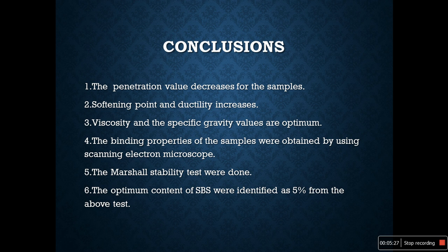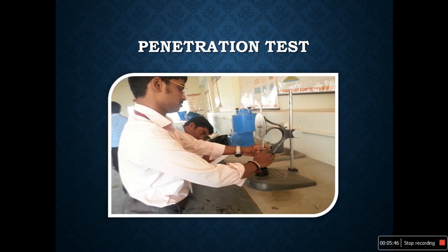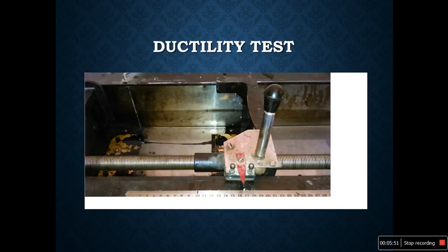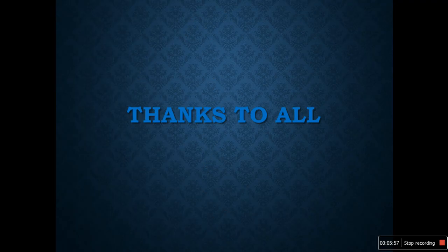We can conclude that the penetration value decreases for the samples, softening point and ductility increase, and viscosity and specific gravity values are optimum. The binding properties of the samples were obtained using the scanning electron microscope. Marshall stability tests were done and the optimum content of SBS was identified as 5%. These are the images taken during our laboratory tests — for the penetration test, the softening point test, and the ductility test. Thank you.